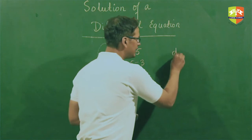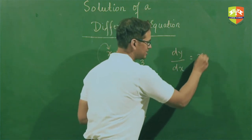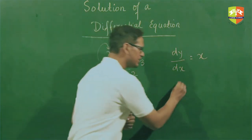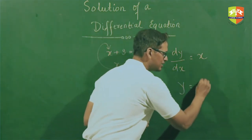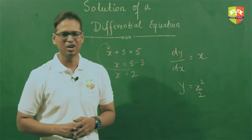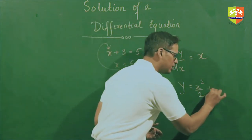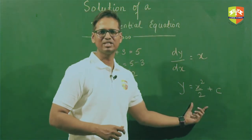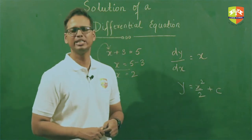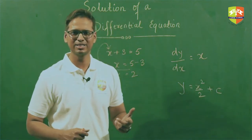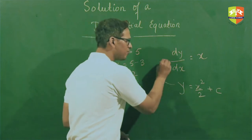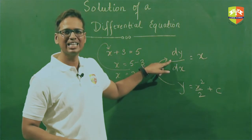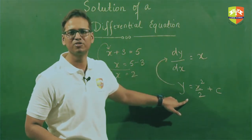If I say dy by dx is equal to x, what is the solution of this differential equation? The solution will be x squared by 2, or you can say x squared by 2 plus c. Because if you find the derivative of y with respect to x, you are definitely going to get dy by dx as x. So this is a solution for this differential equation, or in other words, this differential equation has been formed from this family of curves.